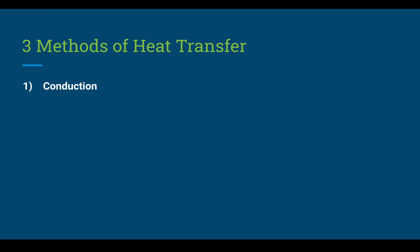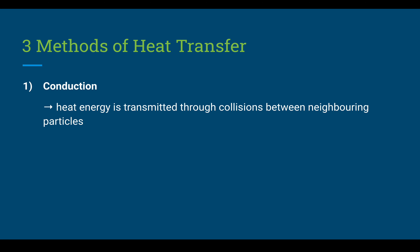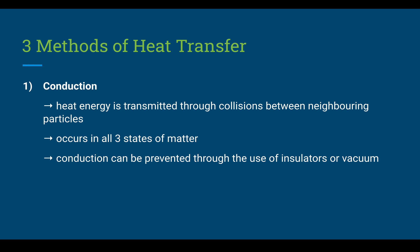There are three methods. The first is conduction, which is when heat is transmitted through collisions between neighboring particles, and it generally happens in all three states of matter. Conduction can be prevented through the use of insulators or a vacuum — for example, a thermos flask prevents heat from escaping.